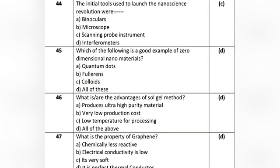Question 22: What are the advantages of the sol-gel method? Option A: produces ultra-high purity material. Option B: very low production cost. Option C: low temperature for processing. Option D: all of the above. The correct answer is Option D: all of the above.